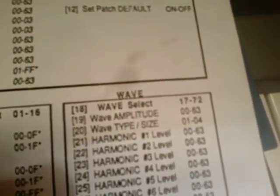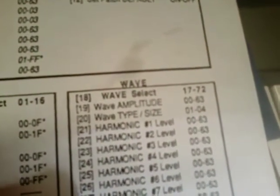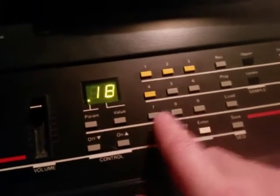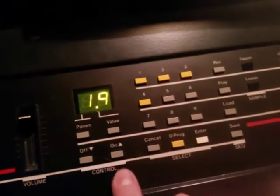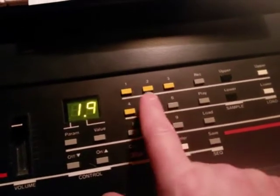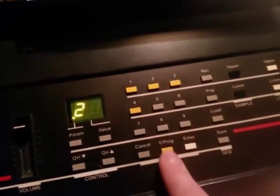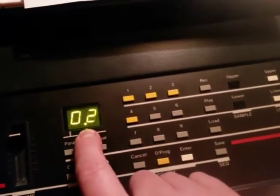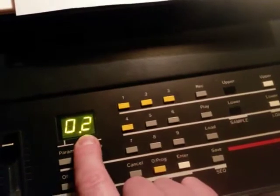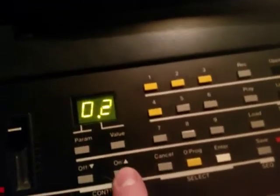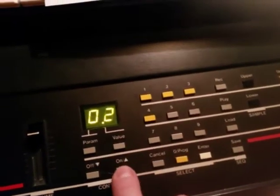Here's what we're going to do: check parameter 18 and parameter 20. Parameter 18 is wave select and parameter 20 is the wave length. At parameter 18, we choose waveform 19. Then in parameter 20 we set the length to two pages. This is tricky because a value of two actually means one page, so if we set it to a value of three, it means a length of two pages. Let's do that.